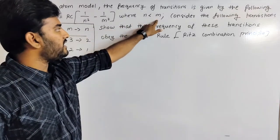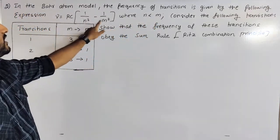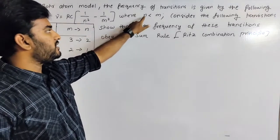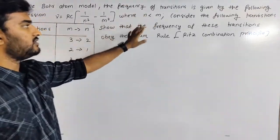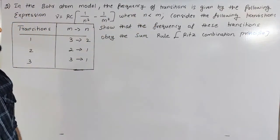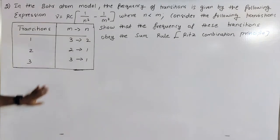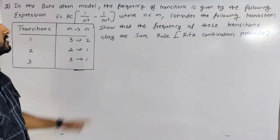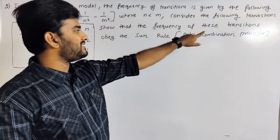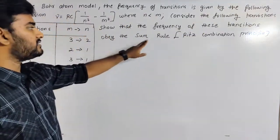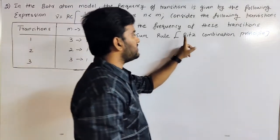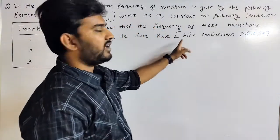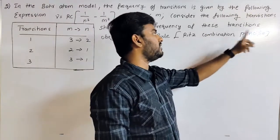Where n is lesser than m. In this equation there are two terms, n and m. Consider the following transitions. Show that the frequency of these transitions obeys the sum rule, which is known as the Ritz Combination Principle.